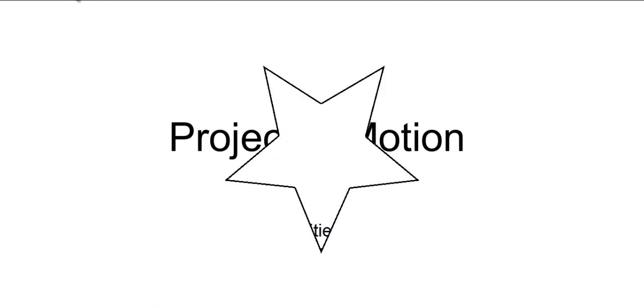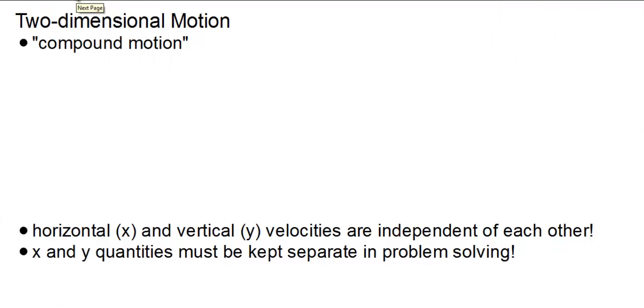Hello. Today we're going to discuss projectile motion. Projectile motion is also referred to as two-dimensional motion. Galileo called it compound motion because it is the combination or the compound of a horizontal constant motion and a vertical accelerated motion.